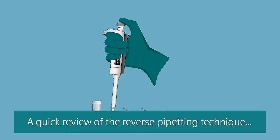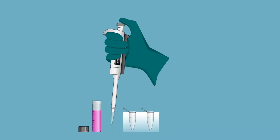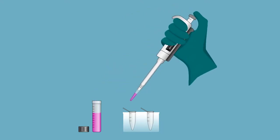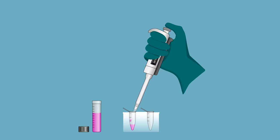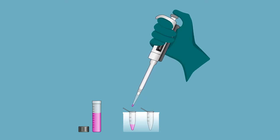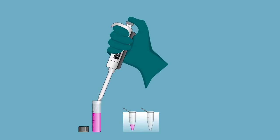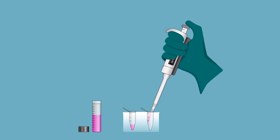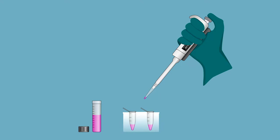In some steps of the protocol, reverse pipetting should be used. Unlike for regular forward pipetting, before aspirating your liquid, push your plunger just past the first stop. Immerse your pipet tip into your liquid, just below the liquid surface. Slowly release your plunger all the way up. When dispensing your liquid, press down just until the first stop. A small volume will be left in your pipet tip. If using the same pipet tip to transfer your liquid to another well, keep your plunger pressed down to the first stop until you put the pipet tip back down in the liquid and slowly release your plunger all the way up. Repeat as necessary. The small volume left in your pipet tip can be discarded once the pipetting is done.